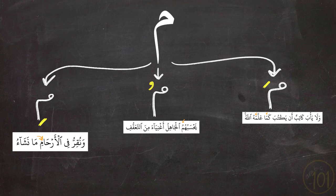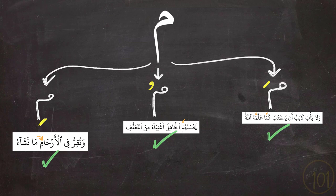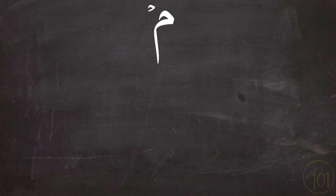So Meem with a short vowel has nothing special since you'll pronounce it like any other letter. Even when Meem has Sukoon, which is this sign on top or no sign at all, you'll still pronounce it normally just like any other letter, like in these examples.